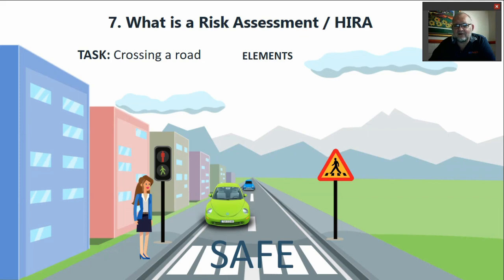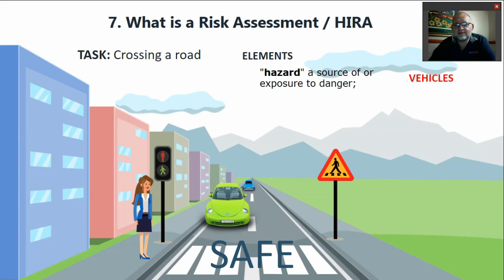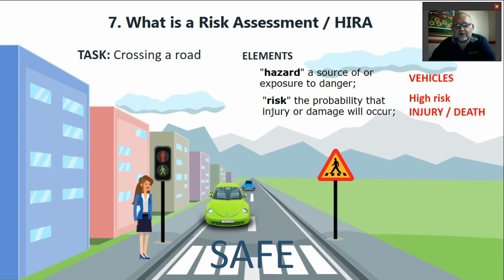Let's quickly have a look at the elements of this risk assessment. Firstly, we need to identify what is a hazard — the hazard being the source of exposure to danger. So what is dangerous here? It's the vehicles. Secondly, what is the risk — the probability that injury or damage will occur? It's a very high risk that if that vehicle bumps you, you're going to get injured or even die.